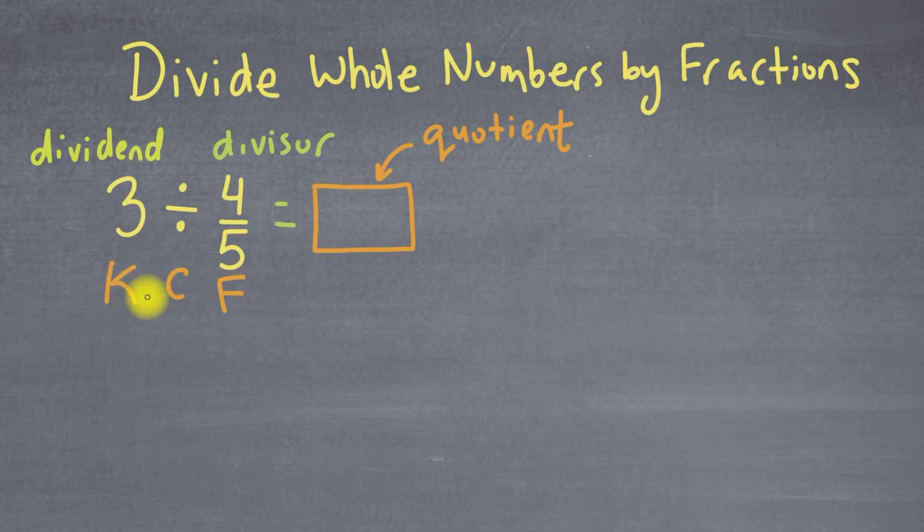But before we can use KCF, I'm going to rewrite the problem over here so that everything is a fraction. So whenever you're dividing and one of these values, the dividend or the divisor is a fraction, make sure you understand that everything needs to be a fraction. And to take this whole number and turn it into a fraction, we're just going to put it over 1.